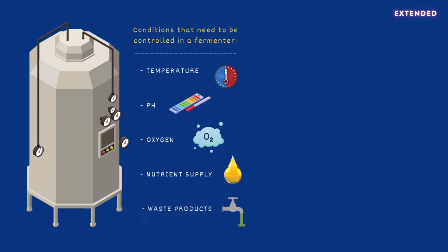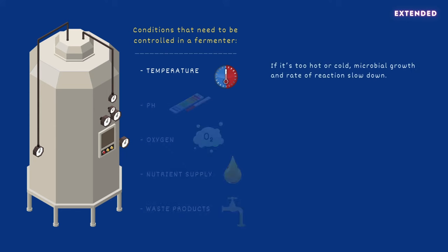The conditions that need to be controlled in a fermenter include temperature, pH, oxygen, nutrient supply, and waste products. Temperature is regulated to ensure that enzymes and microorganisms function optimally. As fermentation releases heat, fermenters generally need to be cooled down.